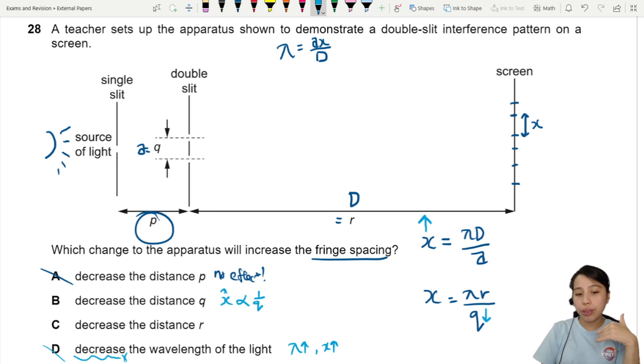Let's check C also. When you decrease R, since X is proportional to R, both will also decrease. Cannot.